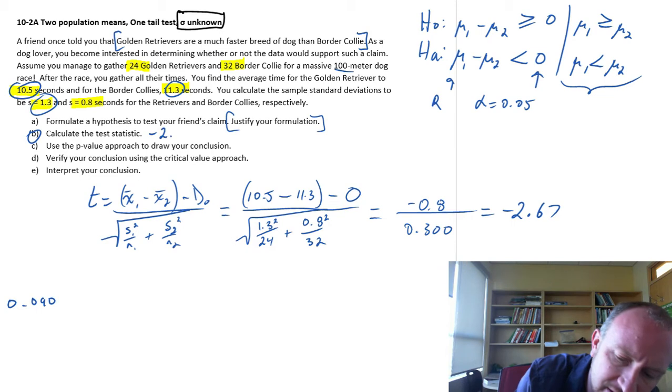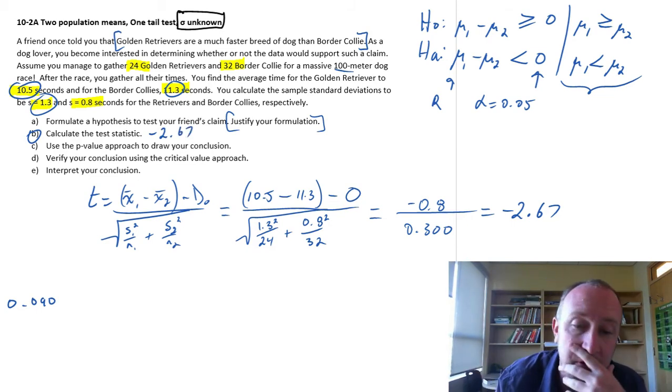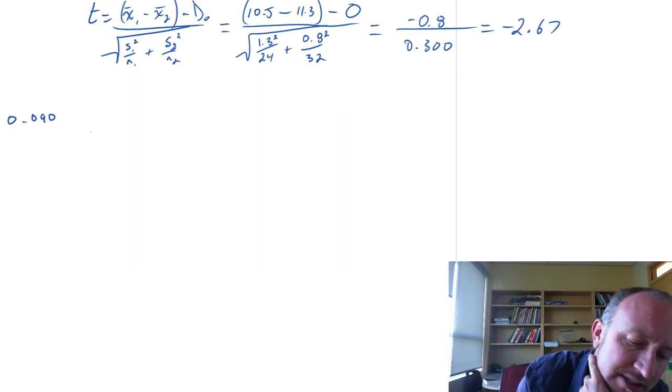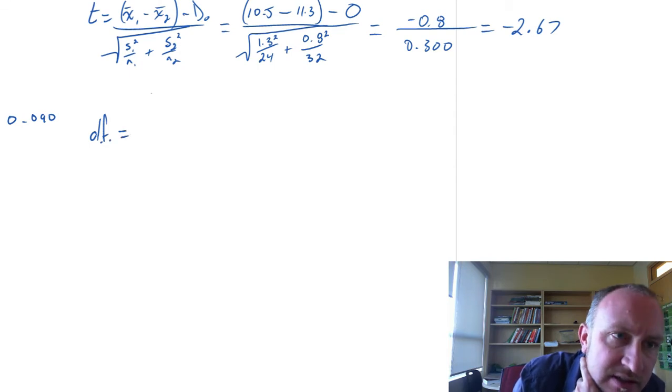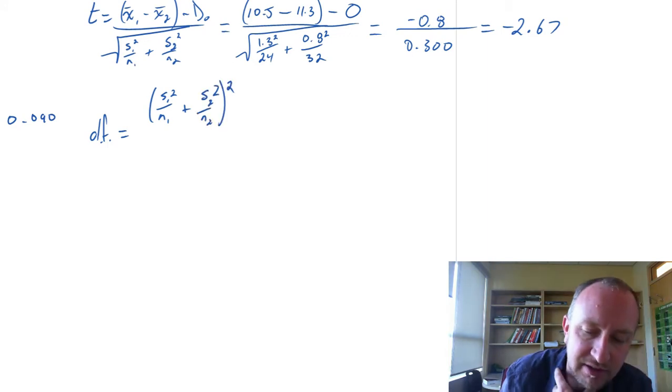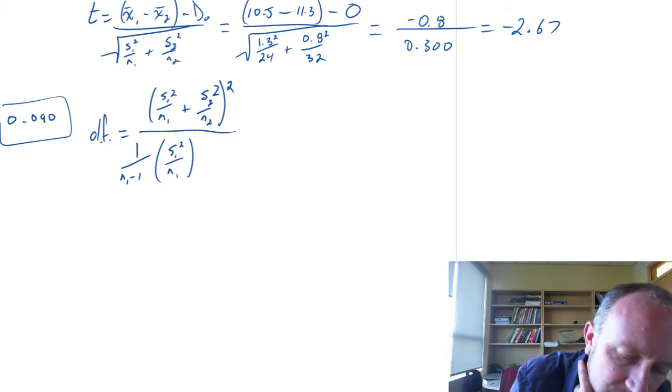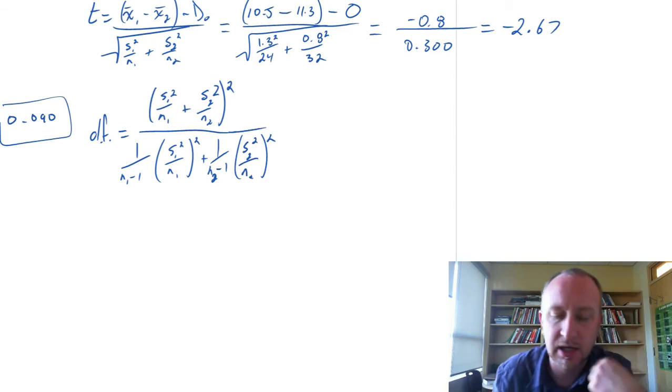So we have part b. So this is our test statistic negative 2.67. Our next step is to use the p-value approach. Well of course using the t-distribution we need to know first what are our degrees of freedom. This is the part that you might not like. I'm just going to scroll down because this formula is going to take up some space. So the degrees of freedom for this exercise is going to be s1 squared over n1 plus s2 squared over n2, all of that squared. Now you see why I've written it down because that's inside those brackets. I've already got that calculated. And then down here this is n1 minus 1 times s1 squared over n1 squared plus n2 minus 1 times s2 squared over n2, all that squared.